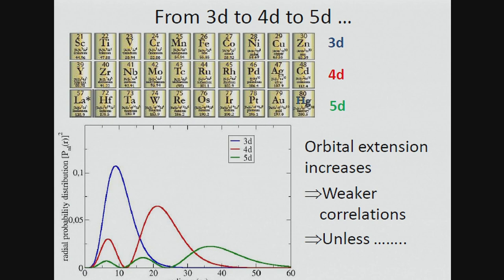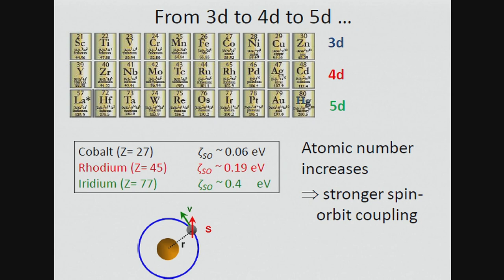When you talk about iridates, you might have second thoughts about correlations. Usually correlated materials are 3D oxides or 4F systems because of the localized orbitals. The localization decreases — or the orbital spread increases — when you go down in the periodic table. So a 5D orbital should be more extended and less prone to electronic Coulomb interactions. In principle you would expect weaker correlations in this class of material, unless something else happens. And here something else happens: what increases going down in the periodic table is the spin-orbit interaction. The spin-orbit interaction of an iridium atom is of the order of other energy scales — hopping, bandwidth, Coulomb interactions — in this compound, and as we will see, this is actually an essential ingredient.